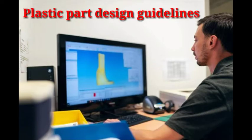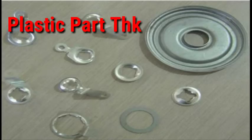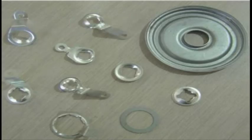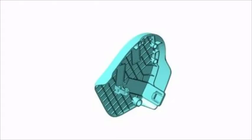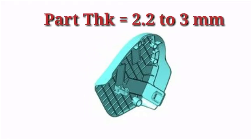We are going to see what the basic plastic part thickness should be. Basically, part thickness is totally dependent upon the function of the part, its surrounding feasibility and surrounding data, strengths, loading-unloading criteria, and many other factors. For seating system design, we prefer plastic part thickness of 2.2mm to 3mm maximum.